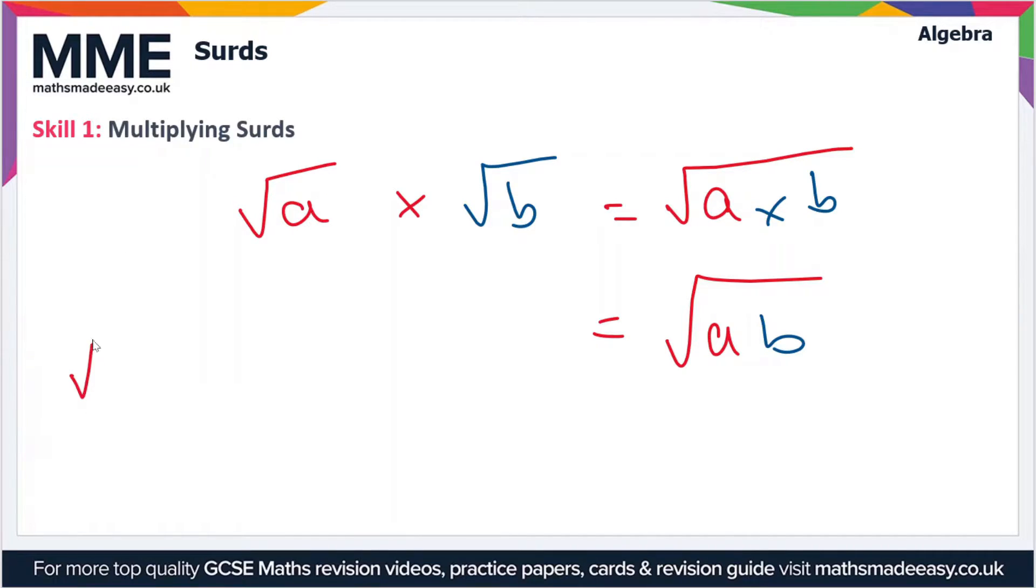So if we use this idea and look at some examples, if we have root 7 times root 2, this is equal to root 7 times 2, which is equal to the square root of 14.